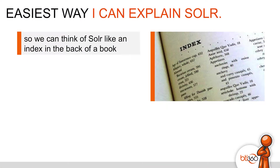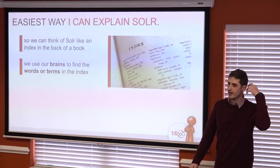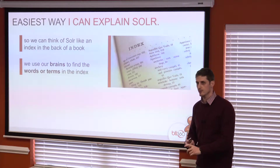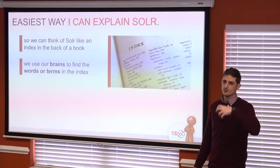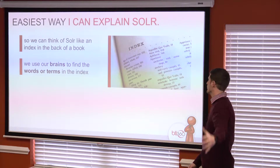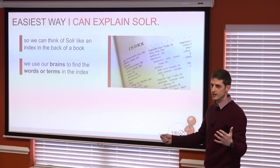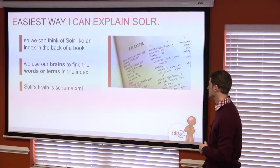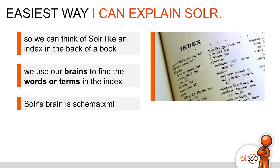We can think of the index in the back of a book kind of like Solr. We use our brains to find words or terms — if I want to find 'apple,' my brain is already figuring out the rules to find apple. Do I need to lowercase it? It starts with an A, so maybe I go to the A's. Those simple rules are kind of how Solr interprets where to find it in the index, through schema.xml. So Solr's brain is schema.xml.